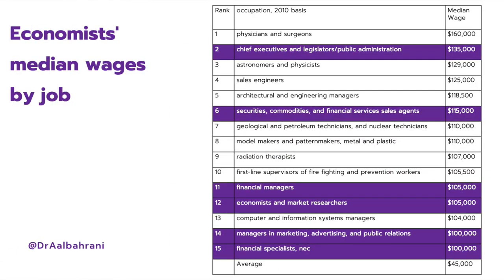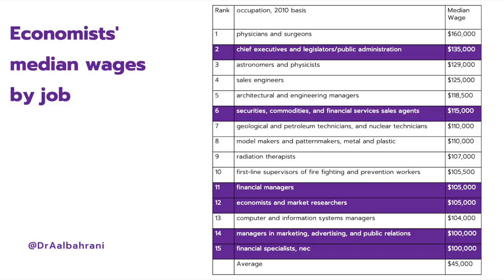A lot of you are worried about studying economics and whether it will translate to good income. What I did here is I tabulated the top 15 highest paying jobs conditional on somebody studying economics. Physicians and surgeons — there's someone who studied economics as their first field of study and then became a physician — earn about $160,000. CEOs are at $135,000. Sales engineers are another example. These are all high-paying jobs. But on average across the entire data set, economists make $45,000 a year.